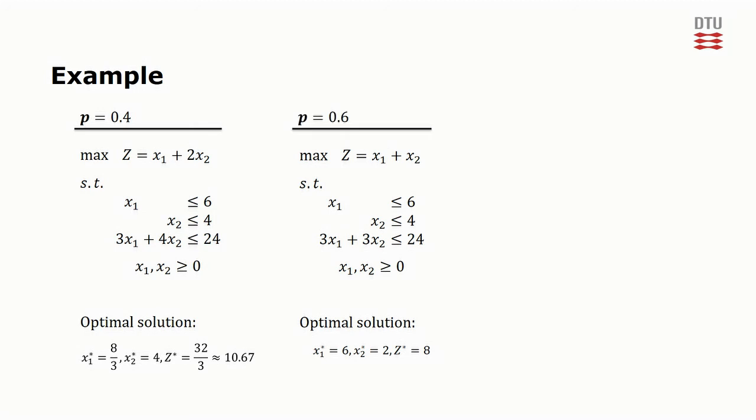The problem is a two stage problem with recourse, where x1 is the stage 1 variable and x2 is the stage 2 variable corresponding to the recourse action. Given the optimal solutions and probabilities of each of the two scenarios, the wait and see solution is calculated to 136 over 15, which is approximately 9.07. This is the best possible objective value one could hope for on average if x1 did not have to be fixed before the true values of the stochastic parameters were revealed.